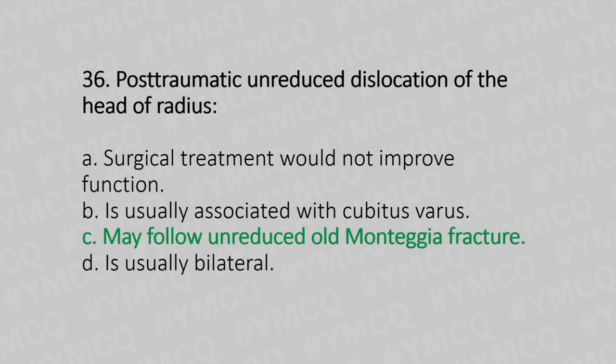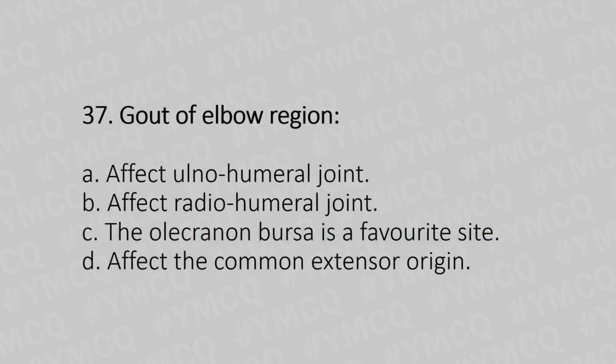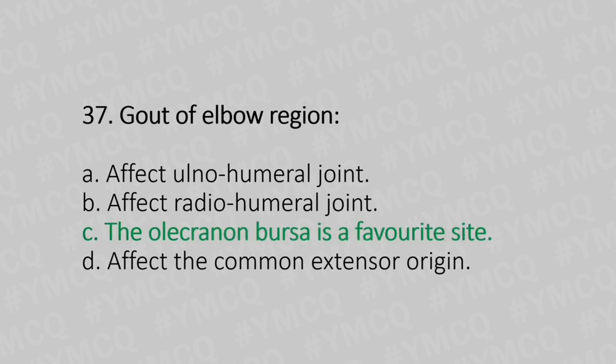Now let's move to question number 37. Gout of the elbow region. Option A: affects the ulnohumeral joint. Option B: affects the radiohumeral joint. Option C: the olecranon bursa is the favourite site. Option D: affects the common extensor origin. And the answer is Option C, the olecranon bursa is the favourite site.